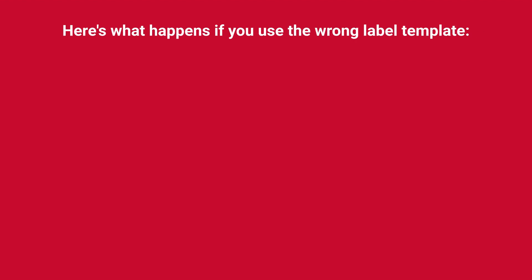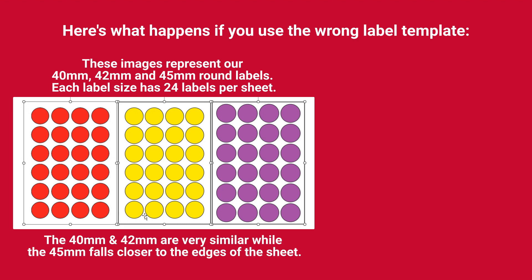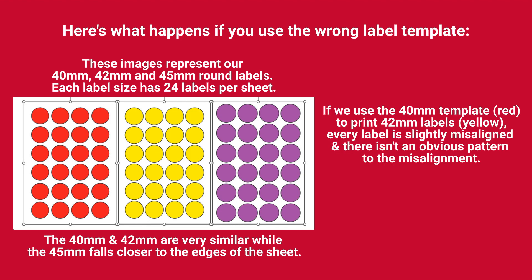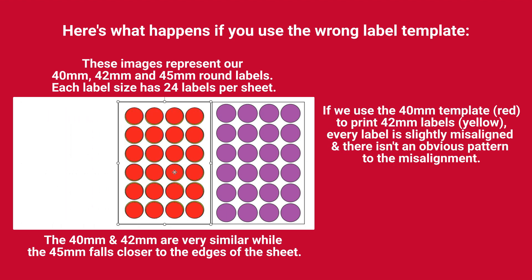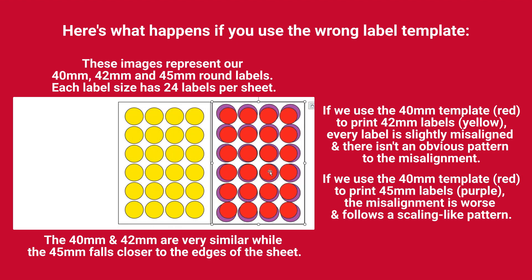Here's what happens if you use the wrong label template. These images represent our 40mm, 42mm, and 45mm round labels, each with 24 labels per sheet. The 40mm and 42mm are very similar, while the 45mm falls closer to the edges of the sheet. If we use the 40mm template (red) to print 42mm labels (yellow), every label is slightly misaligned and there isn't an obvious pattern to the misalignment. If we use the 40mm template (red) to print 45mm labels (purple), the misalignment is worse and follows a scaling-like pattern.